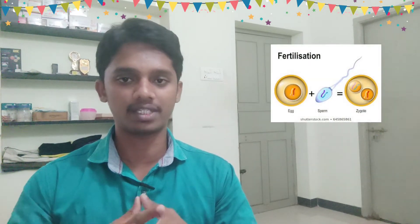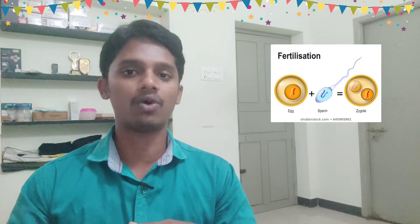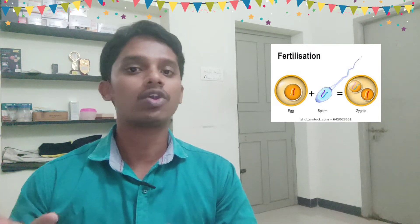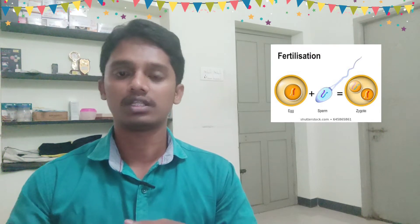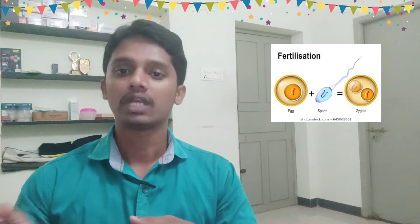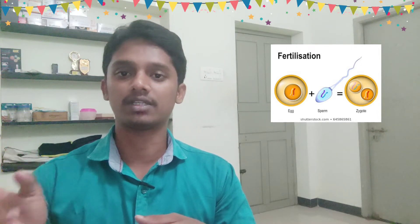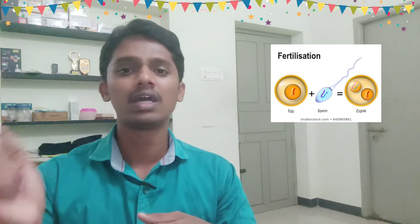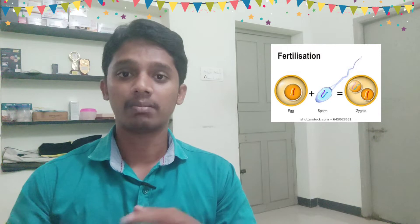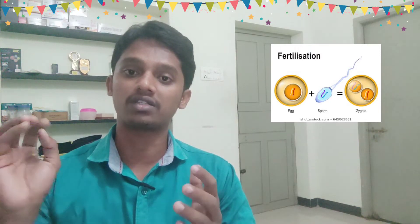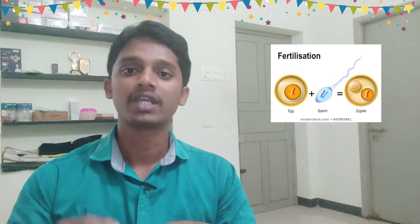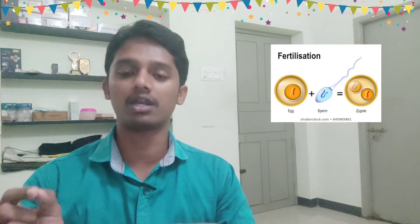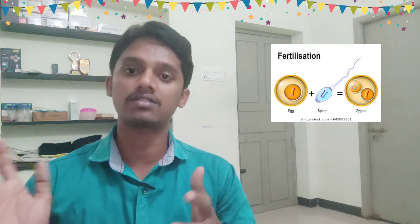If you look at the human body, the male sperm and the female egg, or ovum, come together to form a single cell called the zygote. This zygote is a single cell. But in our body there are trillions of cells — all originating from that single zygote cell.